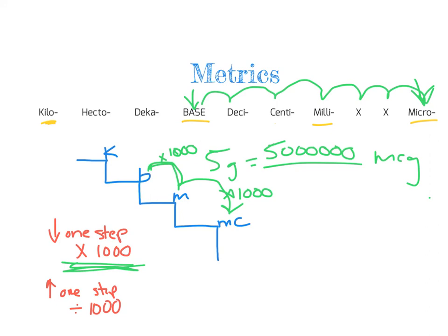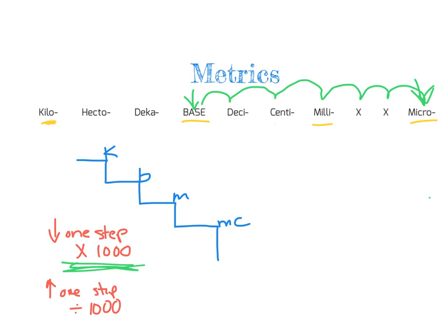I've got a couple of review videos in the review video folder — one on the decimal movement method and a separate video on the stair step method. A lot of nurses stick with the stair step method because it means they only have to remember kilo, base, milli, and micro. Stick with whichever method works best for you. That is metrics — let me know if you have any questions.